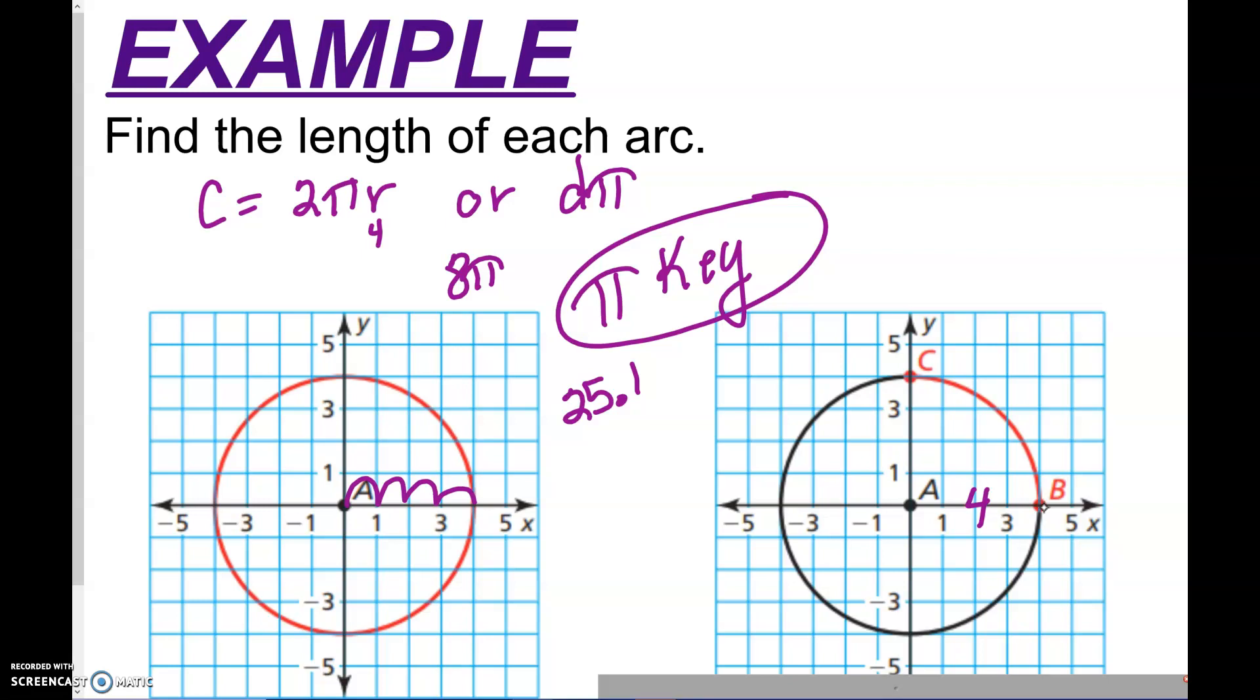And I know many of your brains are already thinking ahead in what we have to do to find this. So many of you are just going to take this number right here, and you're going to divide. What are you guys going to divide by? You're probably just going to divide by 4. So you're going to take 25.1 and divide by 4. And 25.1 divided by 4 gives us 6.275 units long.